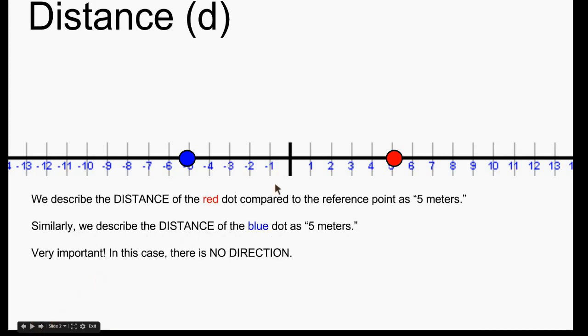Now distance is similar in some ways and different in others. The distance of the red dot compared to the reference point is just 5 meters. And the same is true for the blue dot. We'd also say that the distance is 5 meters. In this case, for distance, direction is not important.